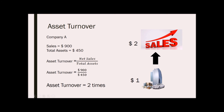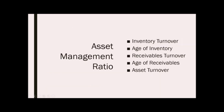Once again, asset management ratios measure the efficiency with which the firm uses its assets to produce sales. These ratios are inventory turnover, age of inventory, receivables turnover, age of receivables, and asset turnover.